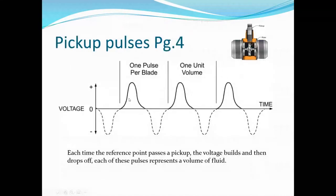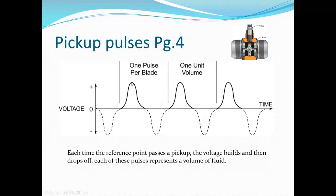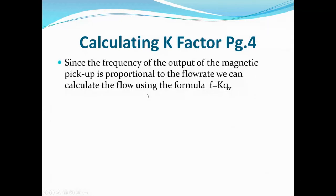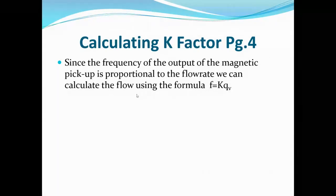As the rotor spins, it approaches and then moves away from the pickup, generating an oscillating sinusoidal wave. Every time the detector senses a blade coming closer, it counts it. That voltage building up and dropping off represents a specific volume of fluid — one pulse represents a specific volume. We can calculate volumes based on the number of pulses, and the frequency of the magnetic pickup output is proportional to the flow rate.